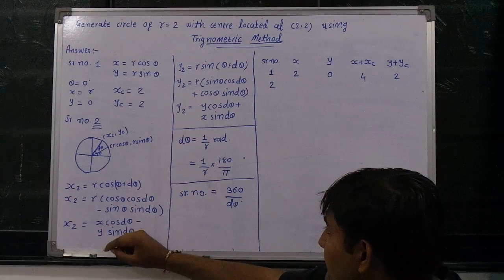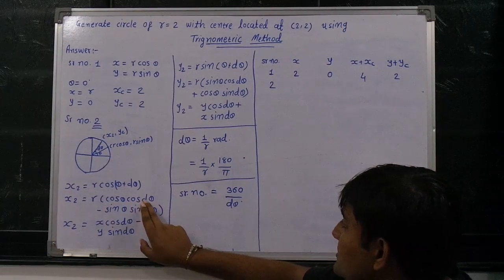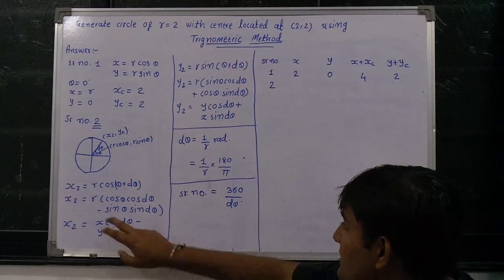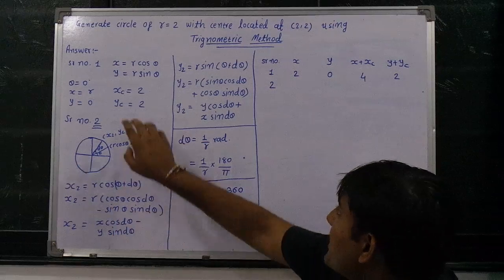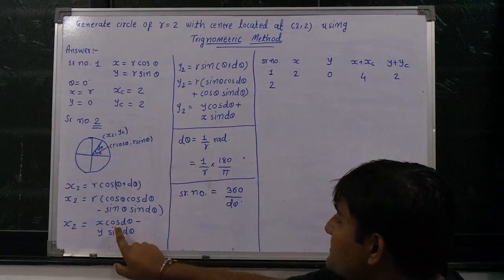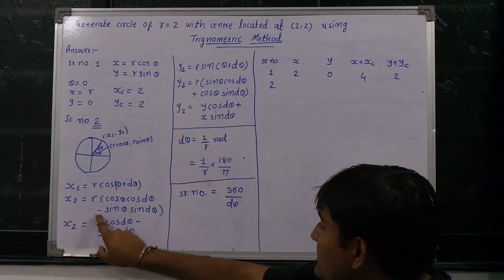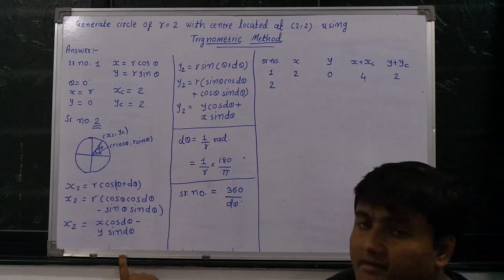Mathematical formula: cos(theta plus d theta) equals cos theta cos d theta minus sin theta sin d theta. Now I am putting r value inside the bracket. So r cos theta means x, correct? So x cos d theta minus r sin theta, which is equal to y, so y sin d theta.